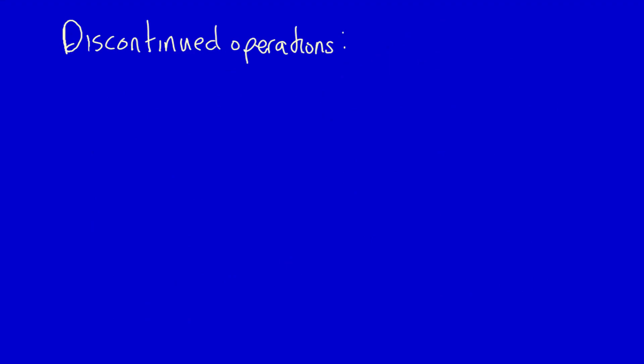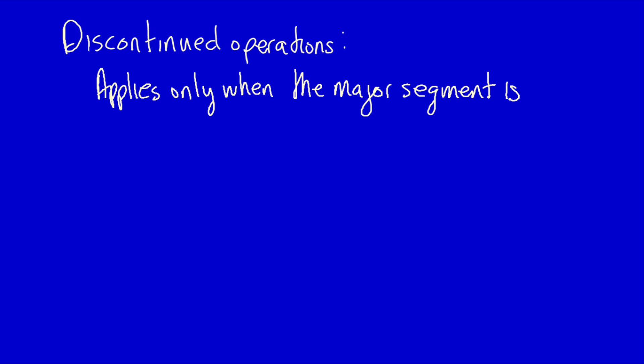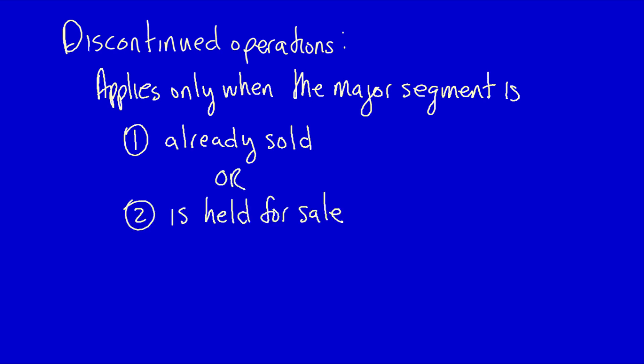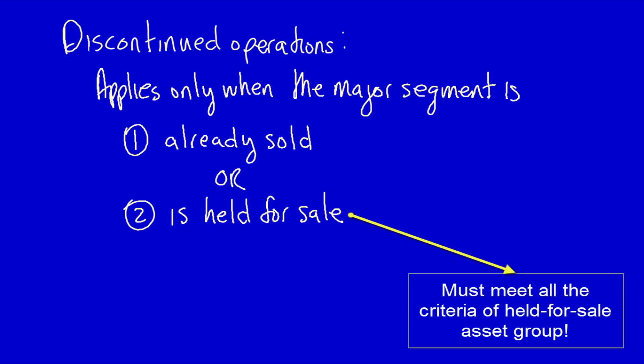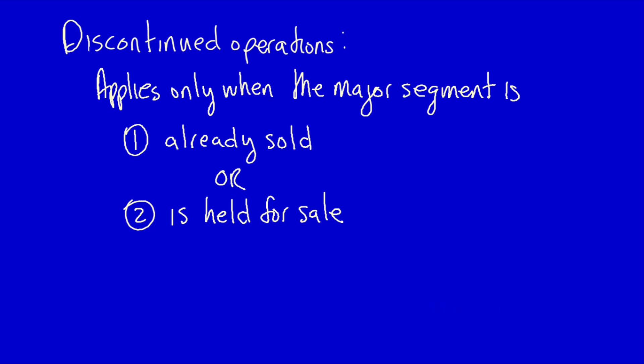What else is important to understand about discontinued operations? The designation as discontinued operations only applies when the major segment is either: (1) already sold — so this would have already happened in the past — or (2) is held for sale. This means that if the major segment has not yet been sold, all the requirements under held-for-sale assets or held-for-sale asset groups must be met before you can indicate that it is a discontinued operations.